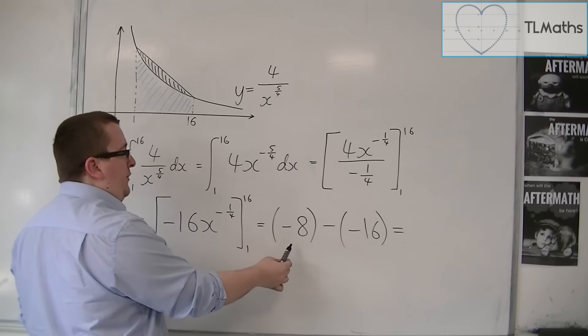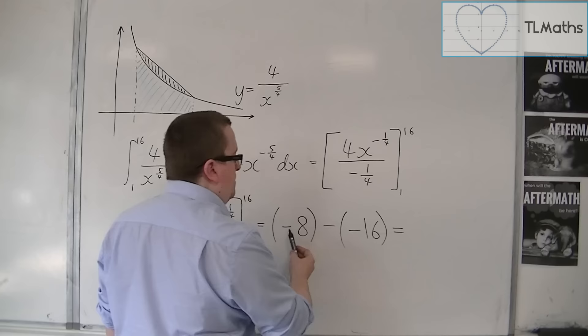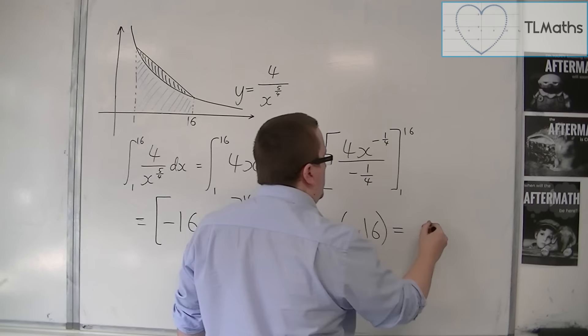So I have minus 8 take away minus 16, which is minus 8 plus 16, which gets me 8.